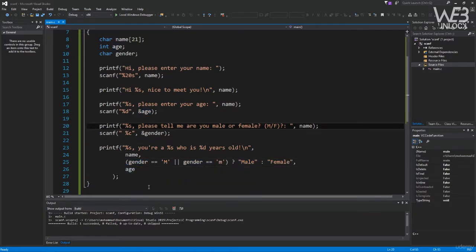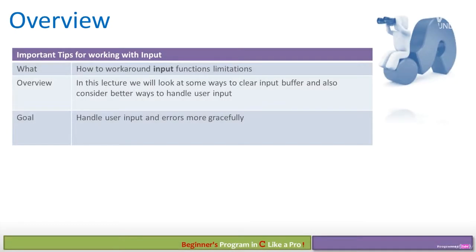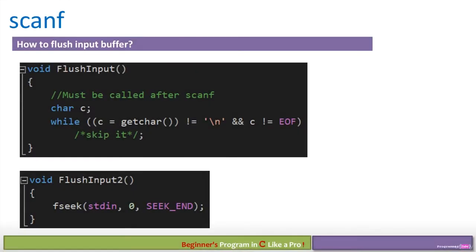In this lecture on working with input — important tips — we look at how to work around input function limitations, how to clear the input buffer, and better ways to handle user input. The goal is to handle user input more gracefully and handle errors. To flush the input buffer when using scanf, there are two techniques. In the previous lecture we saw how residual input in the buffer stream could cause the next scanf call to grab unexpected data.